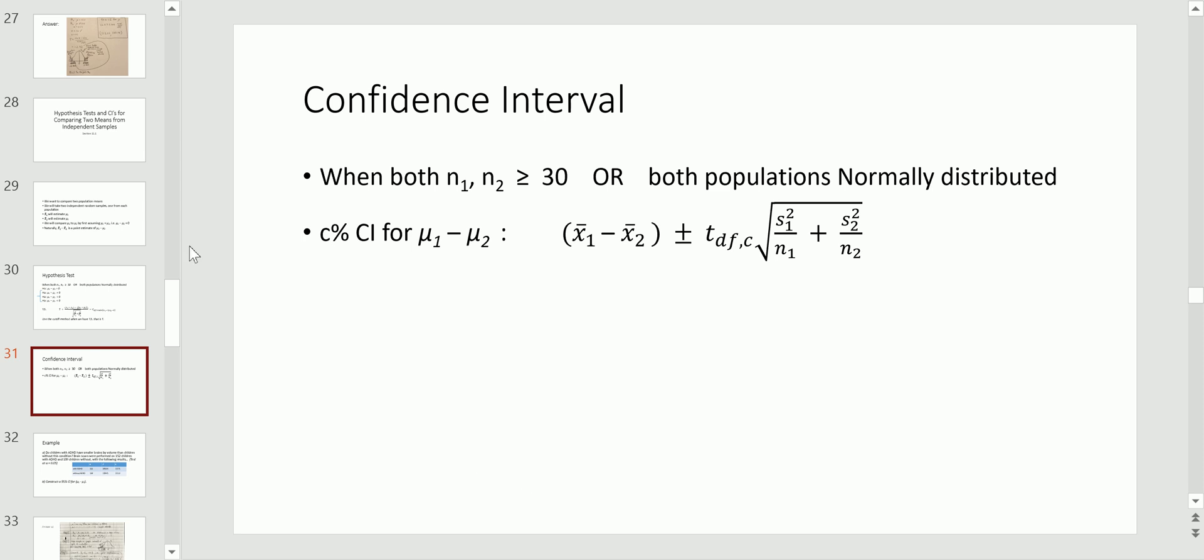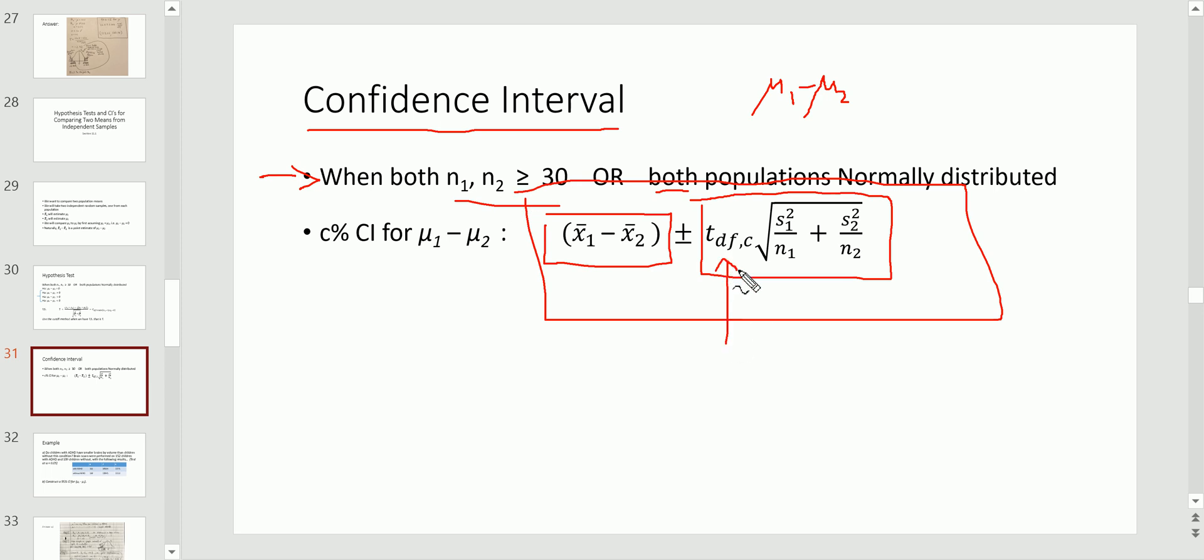Now, the confidence interval, also very easy to compute. The confidence interval for the difference between mu1 and mu2 is computed as such. You take the point estimate and you add and subtract the margin of error. Before you do any of this, make sure that same condition that you checked for the hypothesis test is satisfied, both sample sizes at least 30, or both populations normally distributed. If so, this is the method for coming up with a confidence interval. Here's the t-multiplier. You're used to seeing this now. And here is the standard error, which is an estimate of the standard deviation of the point estimate.